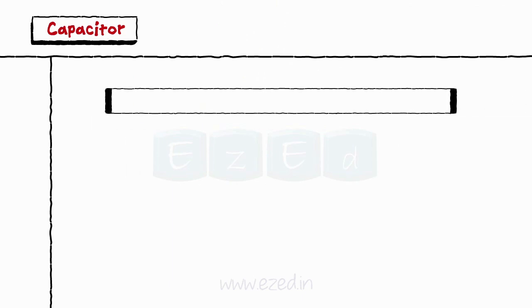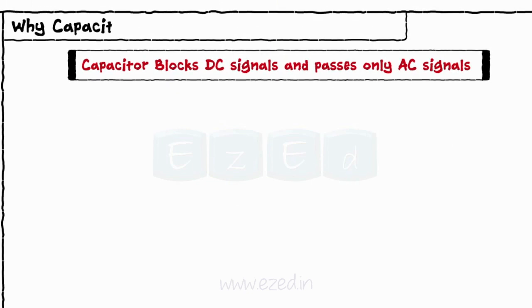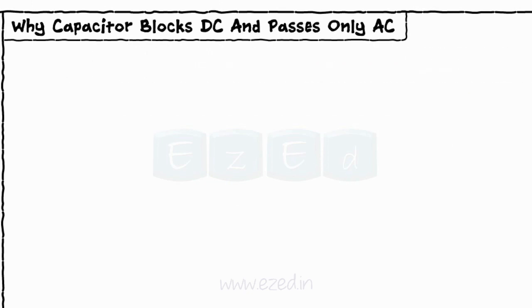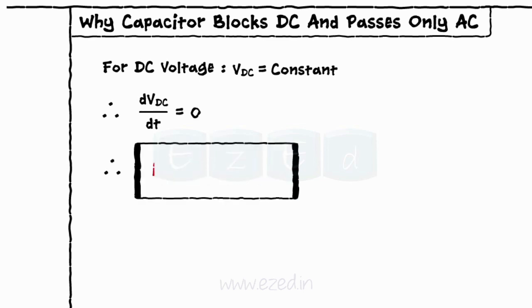We all know that a capacitor blocks DC signals and passes only AC signals. Let's see why. We know the equation for the current flowing through a capacitor is I equals C into dVc by dt, where V is the applied voltage. For DC voltage applied, the voltage V remains constant and the differentiation of constant term is always zero. Thus, when DC voltage is applied, the current through the capacitor is always zero.